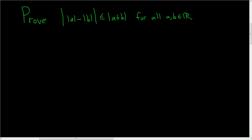In this video we're going to prove what's called the reverse triangle inequality. The reason it's called the reverse triangle inequality is if you recall the regular triangle inequality says that the absolute value of x plus y is less than or equal to the absolute value of x plus the absolute value of y. Whereas here the absolute value of x plus y is greater than or equal to the stuff over here, so the inequality sign has been reversed.